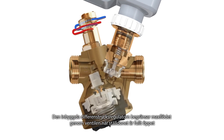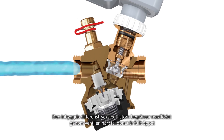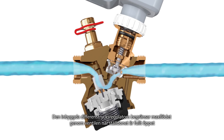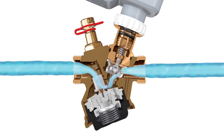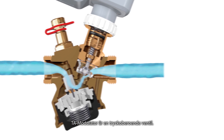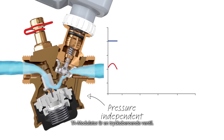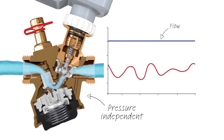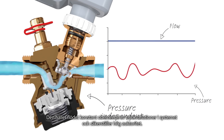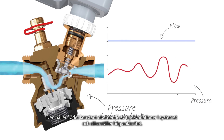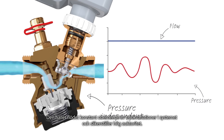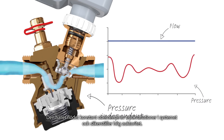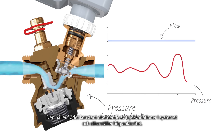The built-in pressure controller limits the maximal flow through the valve when the actuator is fully open. TA Modulator is a pressure independent valve — it keeps the flow constant regardless of pressure fluctuations in the system and guarantees high control authority.